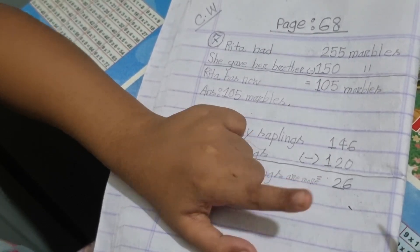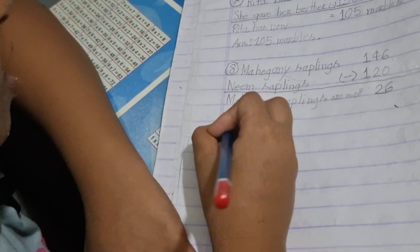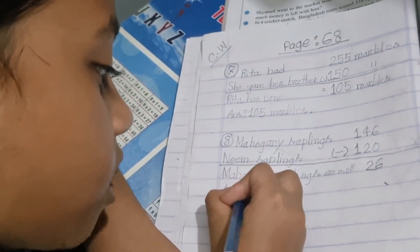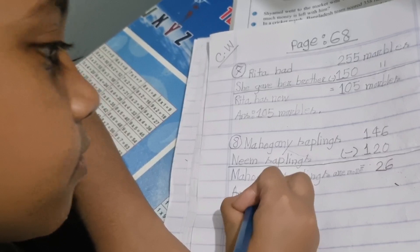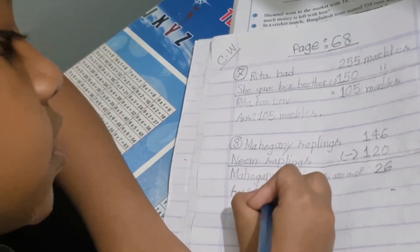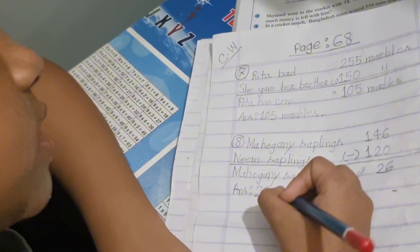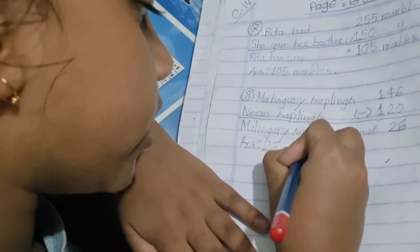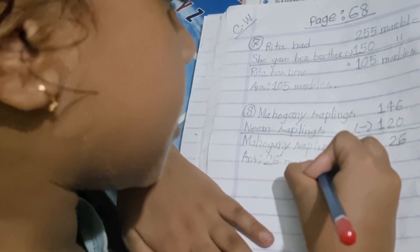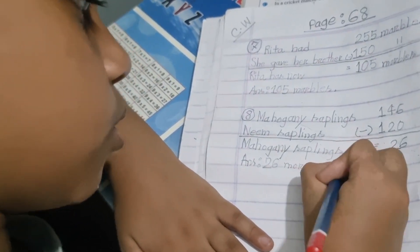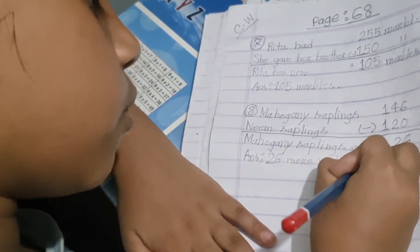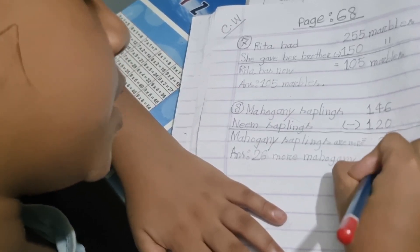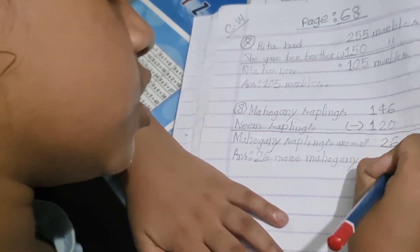So we can put 0 here. Our answer is 26 saplings, 26 more mahogany saplings.